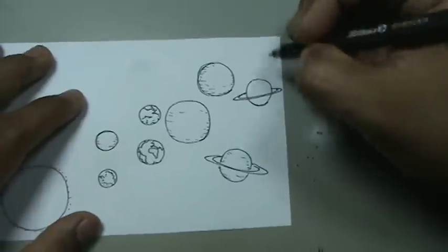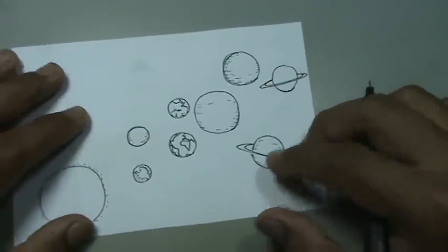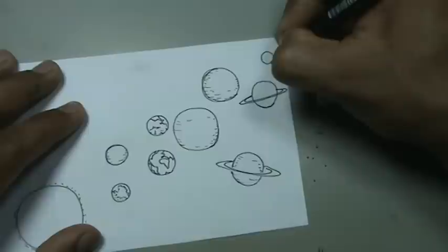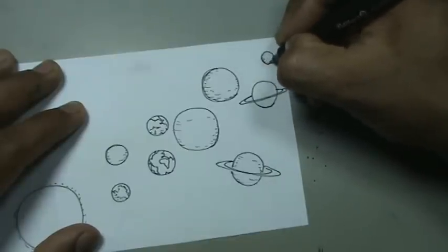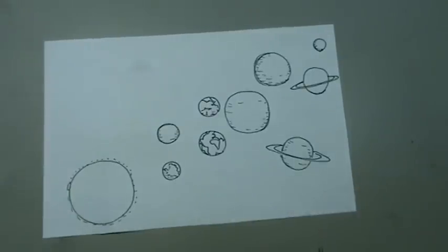Y uno que pues creo que ya no se considera como planeta, pero forma parte del sistema y es Plutón. Voy a dibujarlo por acá de último. Listo. Tenemos entonces ahí los planetas. Vamos a aplicar un poco de color.